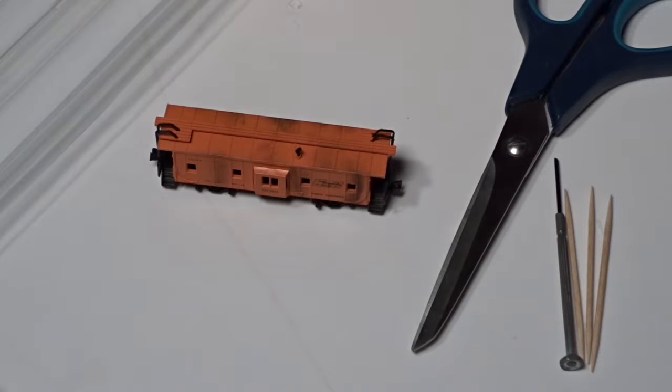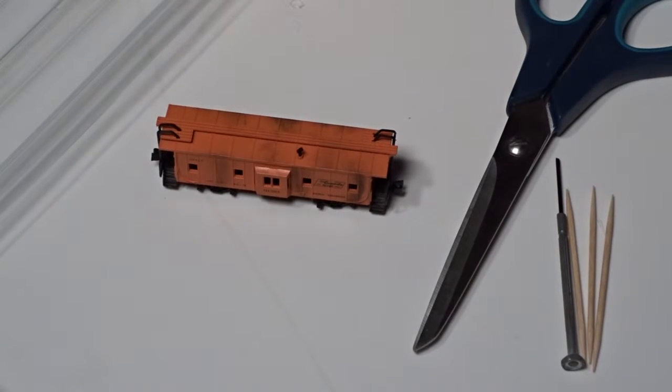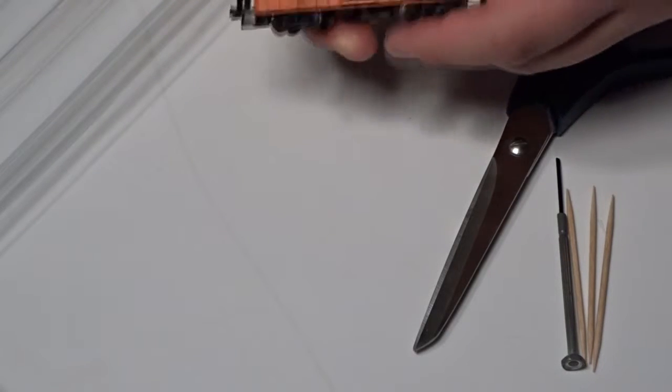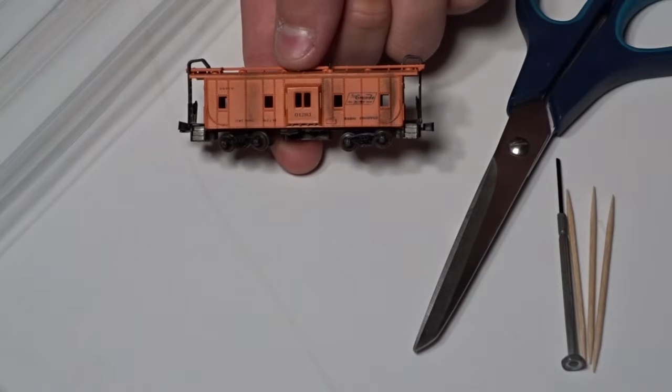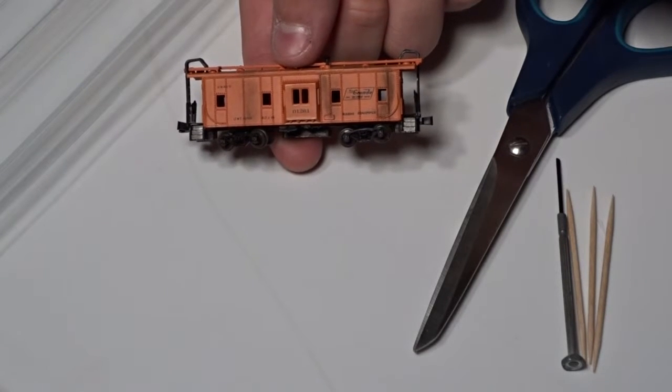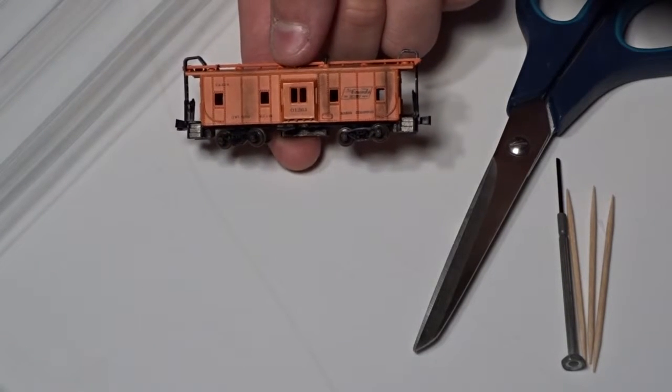All right, hey everybody and welcome to another episode of Colorado Railroad Productions. Today we're going to do something a little different. We're going to do a how-to on how to put windows in a caboose or any other piece of rolling stock in any scale that doesn't have windows to make it look a little more realistic.